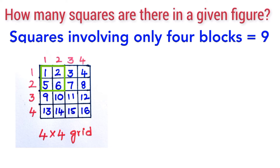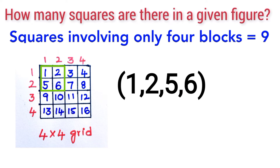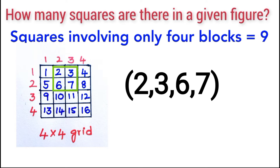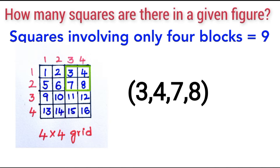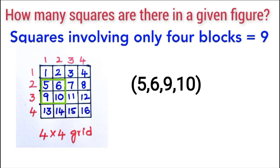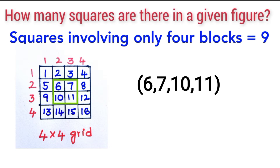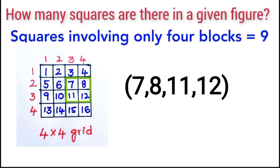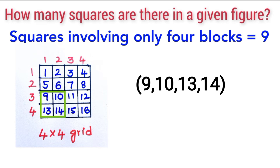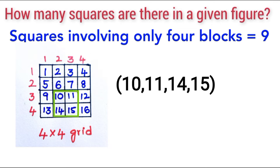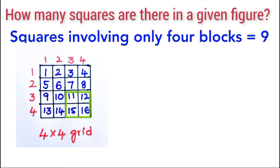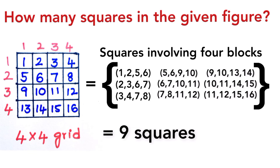Now let us see the square combinations involving only 4 blocks — that is, 2×2 squares. The combinations are: {1,2,5,6}, {2,3,6,7}, {3,4,7,8}, {5,6,9,10}, {6,7,10,11}, {7,8,11,12}, {9,10,13,14}, {10,11,14,15}, and {11,12,15,16}. Together, these give us 9 squares which involve only 4 blocks.